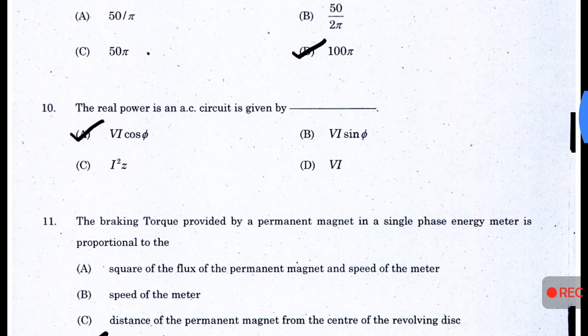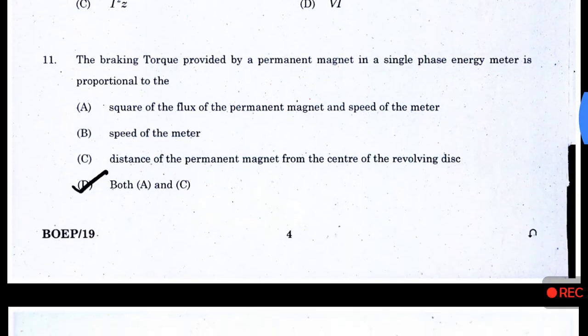Answer D. The real power in an AC circuit is given by V·I·cos(φ). The braking torque provided by a permanent magnet in a single-phase energy meter is proportional to — answer D — both A and C: the square of the flux of the permanent magnet and the speed of the meter.